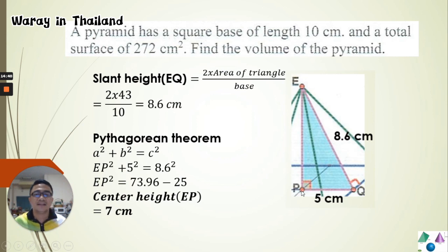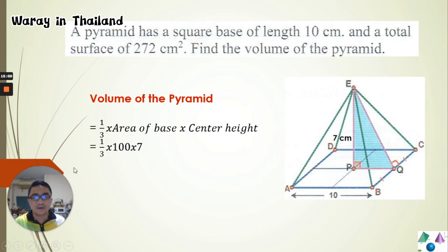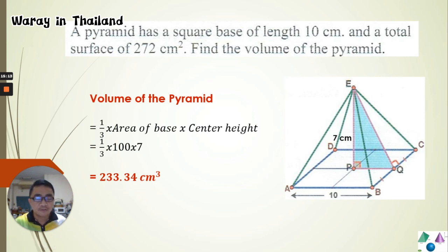Now we have both the center height (7 cm) and the base area (10 × 10 = 100 cm²), so we can find the volume. V = one-third × 100 × 7 ≈ 233.33 cubic centimeters. That's all for today. We'll continue next time to find the volume of a cylinder. See you, bye bye!